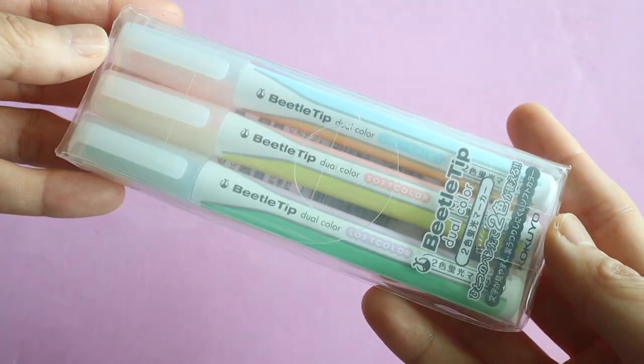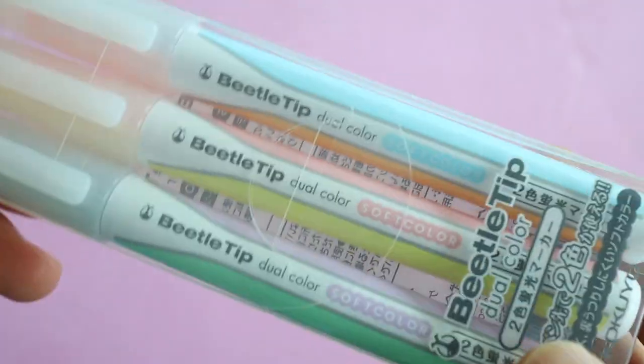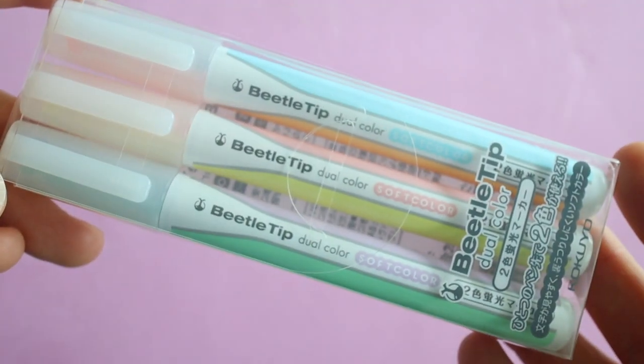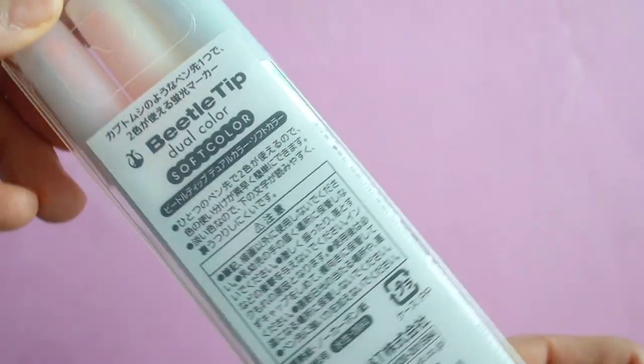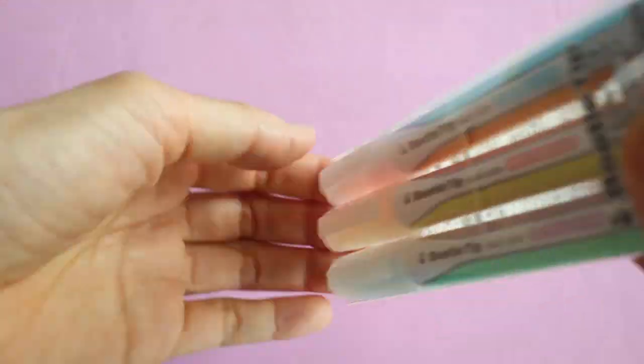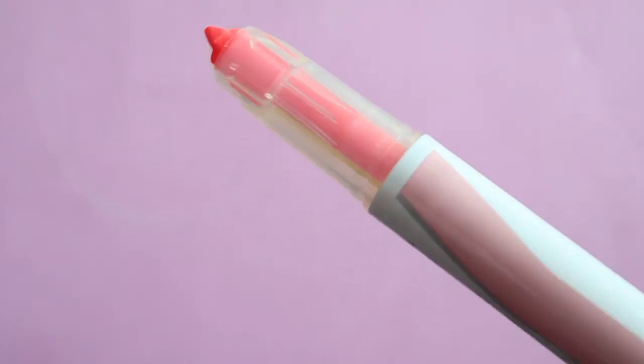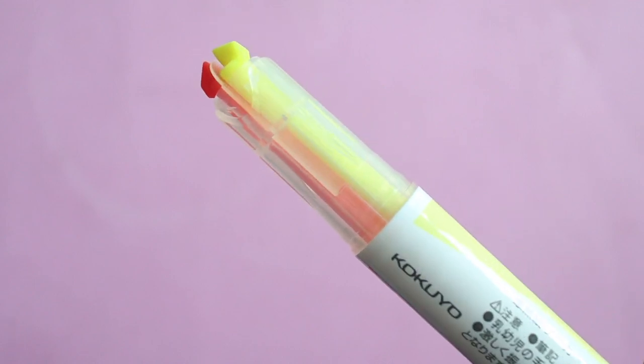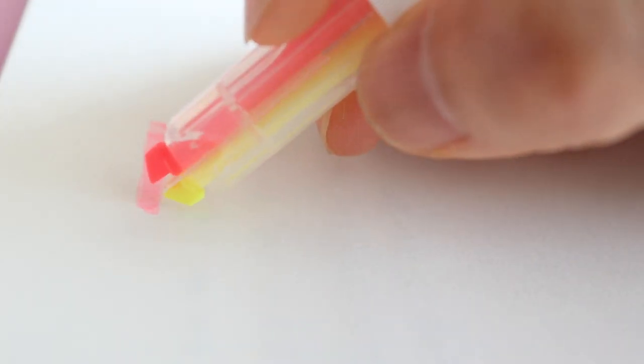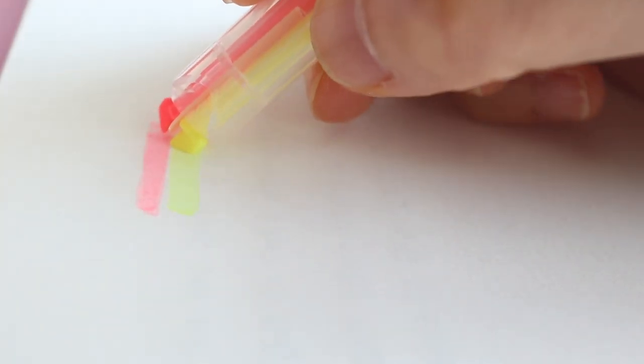These are the Kokuyo Beetle Tip Dual Color Highlighters. And they come in these really soft pastel colors that are not as bright as your typical highlighter. And the fun thing about these pens is they have two highlighters in one. So you don't have to recap your pen to switch colors. You can just rotate your pen over to the other side.